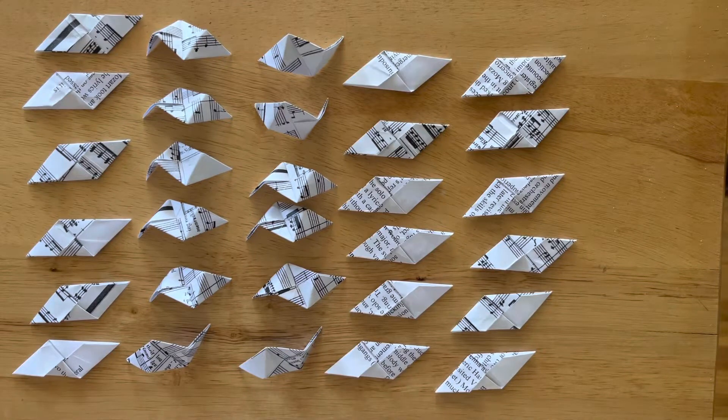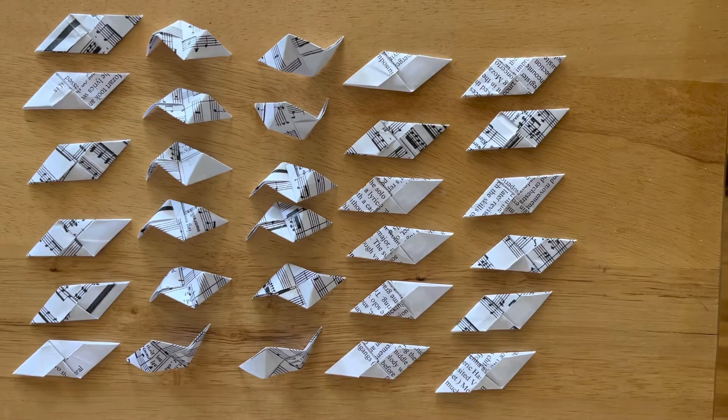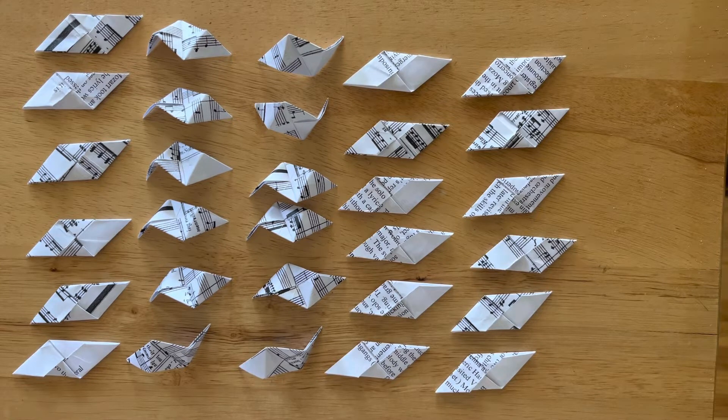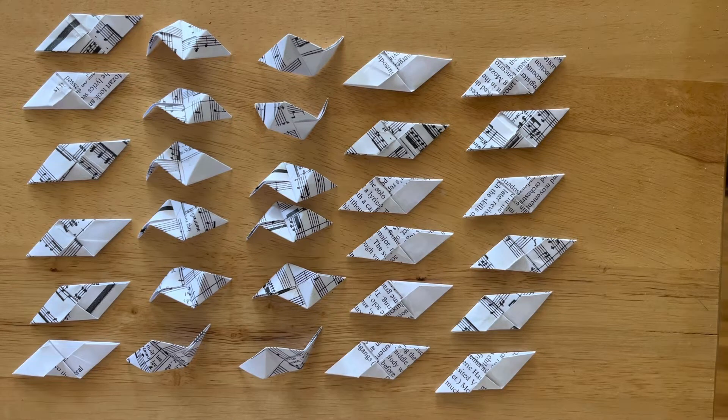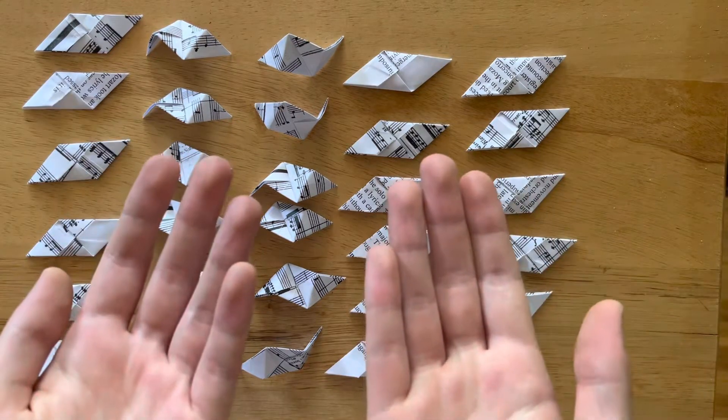In this video we will be assembling 30 Sonobe units into a stellated icosahedron. Hopefully at this point you've watched my Sonobe instruction video for the singular unit. You've made 30 of them, congrats, and you're wondering how do I put them together?